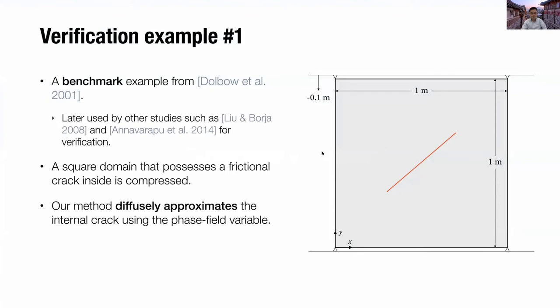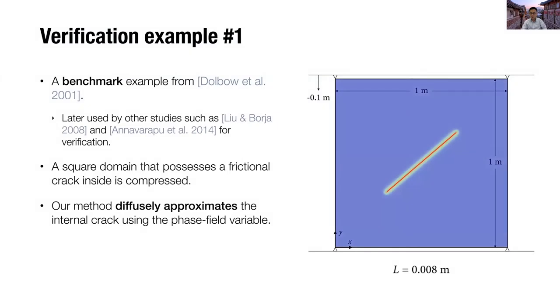Our phase field method diffusely approximates the internal crack using the phase field variable. And here, we approximate the crack using different length parameters. So when we use the length parameter of 0.008 meter, the crack is modeled rather bluntly like this. And as we decrease the length parameter, you can see that the crack becomes sharper and sharper.